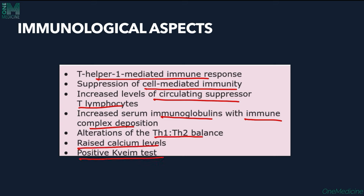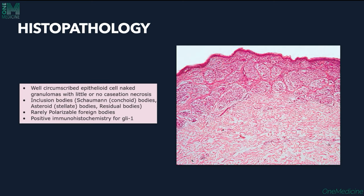Raised calcium levels and a positive Kveim test are seen. In histopathology, we look for sarcoidal granulomas — non-caseating naked granulomas. Well-circumscribed epitheloid cell granulomas with little or no caseation are found. Inclusion bodies seen include Schaumann bodies (or conchoid bodies), asteroid bodies (stellate bodies), and residual bodies.